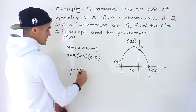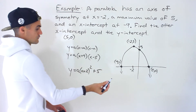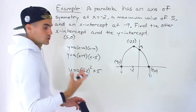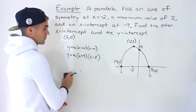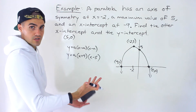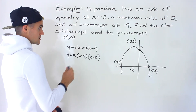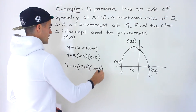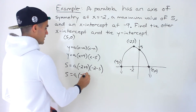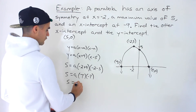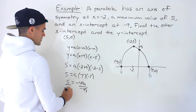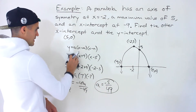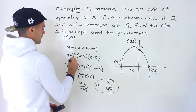Another way is vertex form. The vertex is at negative 2 and 5, so we'd have a(x plus 2) squared plus 5, then plug in one of the intercepts to solve for a. Both methods should give the same a value. Sticking with factored form and plugging in negative 2 and 5: 5 equals a times (negative 2 plus 9)(negative 2 minus 5), which gives 5 equals a times 7 times negative 7, so 5 equals negative 49a. Dividing both sides by negative 49, the a value is negative 5 over 49.